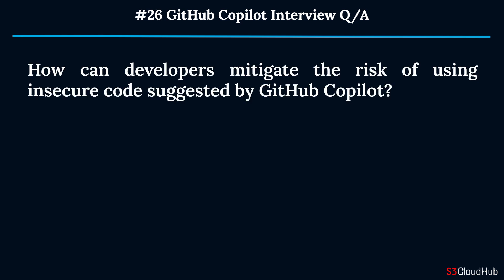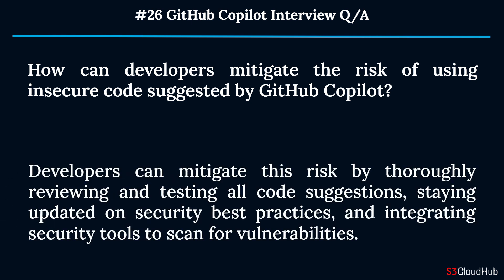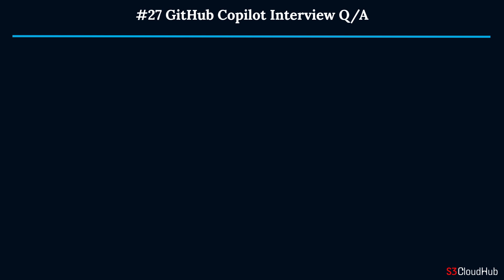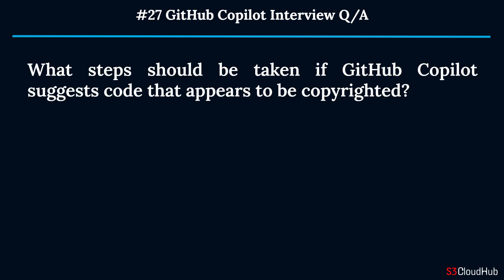Question twenty-six: How can developers mitigate the risk of using insecure code suggested by GitHub Copilot? Developers can mitigate this risk by thoroughly reviewing and testing all code suggestions, staying updated on security best practices, and integrating security tools to scan for vulnerabilities.